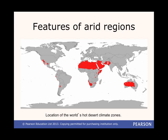Arid regions can be divided into deserts and drylands. Drylands have less than 500 mm of rain a year, but more than 250 mm. Deserts are regions that have less than 250 mm of precipitation a year, which makes them too dry for much vegetation, if any, to grow. Most deserts are located in the subtropics, in a high-pressure zone that keeps skies clear.